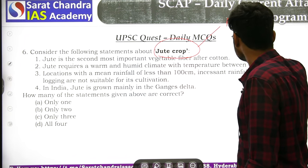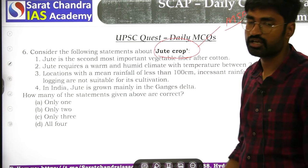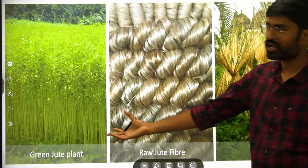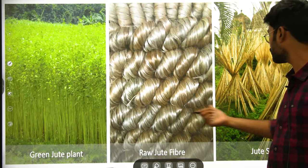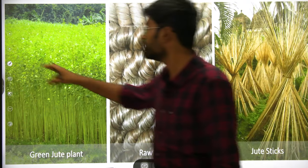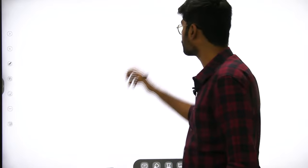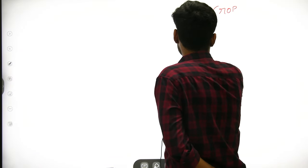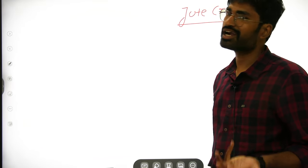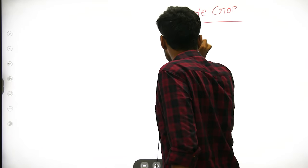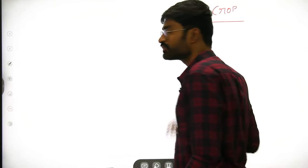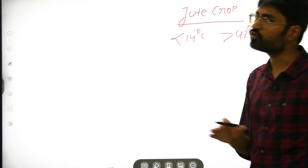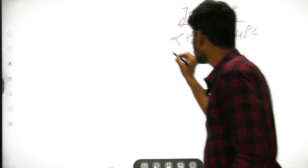The sixth question is about jute crop. Jute crops cannot grow below 14 degrees Celsius or above 42 degrees Celsius. Water logging situations are not suitable for jute cultivation, and rainfall of less than 100 mm is also not suitable for jute crop growth.